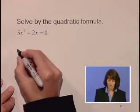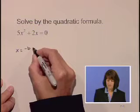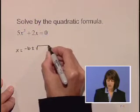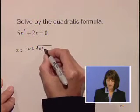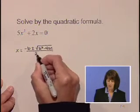Our quadratic formula looks like x equals negative b plus or minus the square root of b squared minus 4ac all over 2a.